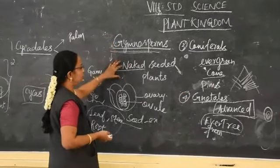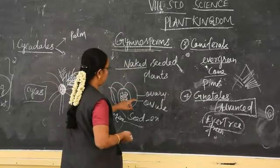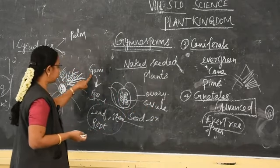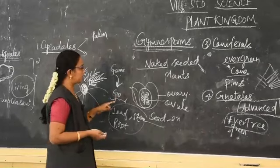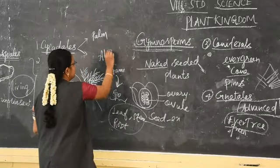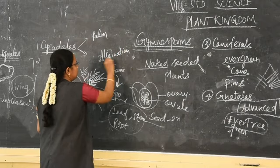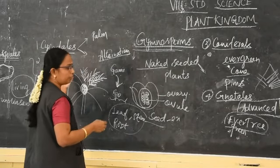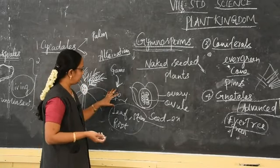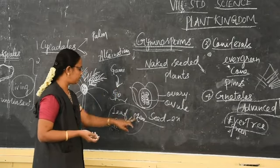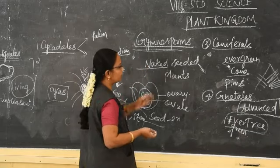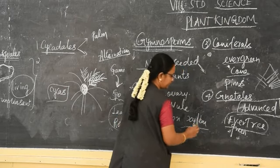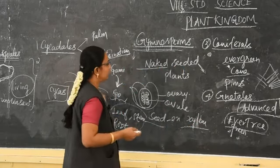When we take about Gymnosperms, they are naked seeded plants — the ovule is not surrounded by the ovary, so their seeds are exposed. The gametophytic generation alternates with the sporophytic generation; alternation of generation is seen, as we have seen in Bryophyta and Pteridophyta. Here the sporophyte is not differentiated into leaves, stem, and root. Gymnosperms consist of vascular tissue — xylem and phloem are present — showing the advanced character.